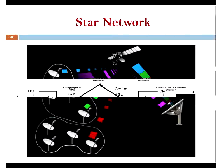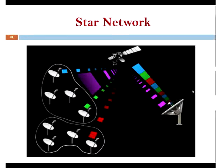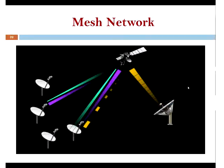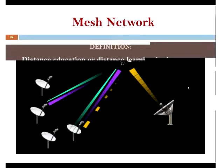VSAT (Very Small Aperture Terminal) is used mostly for banking, retail stores, and automobile industries — any company with a major hub and hundreds of thousands of branches, country-wide or worldwide. There are two topologies: a star topology with a main hub and remote sites, and a mesh network where larger antennas can all communicate with one another through the satellite.